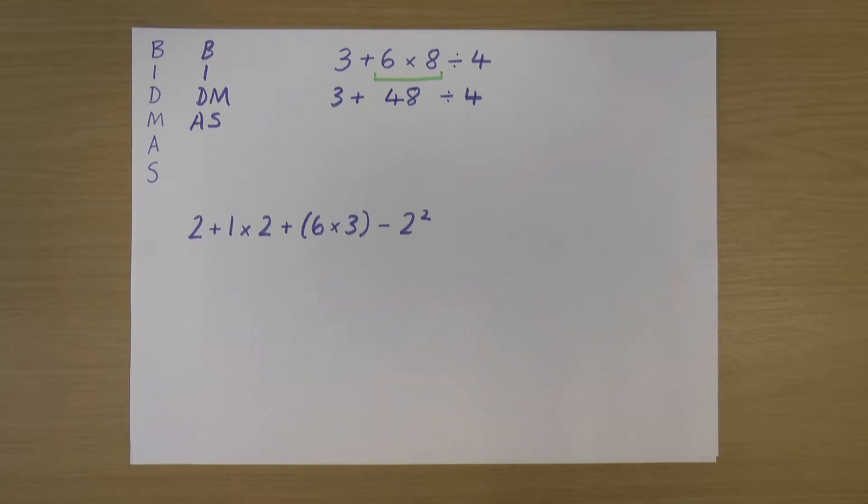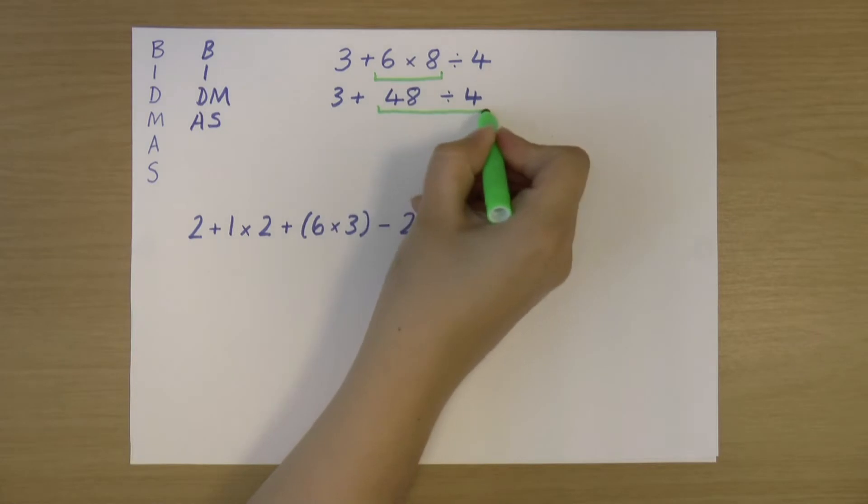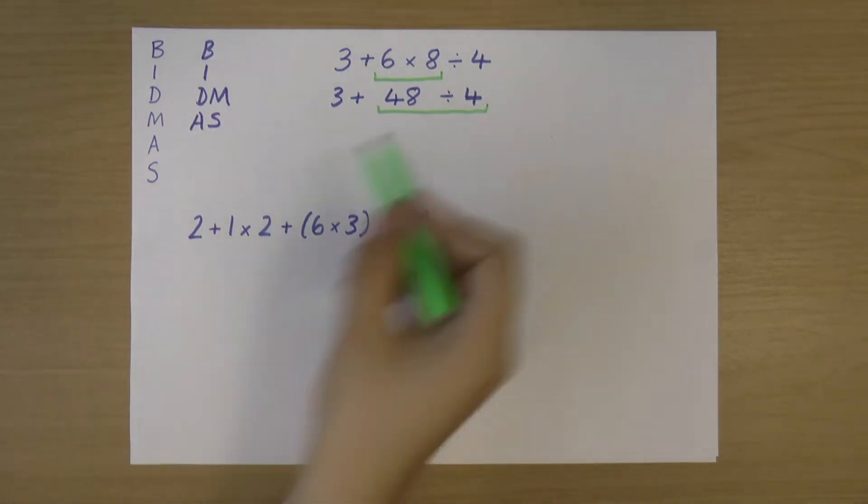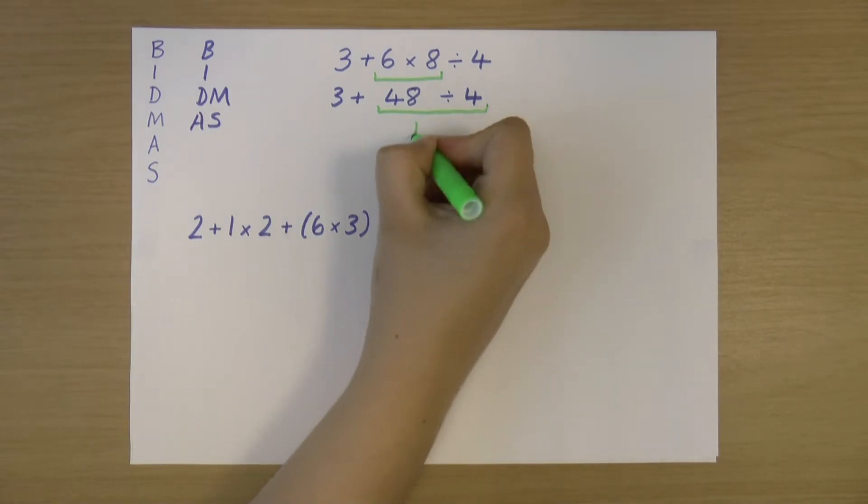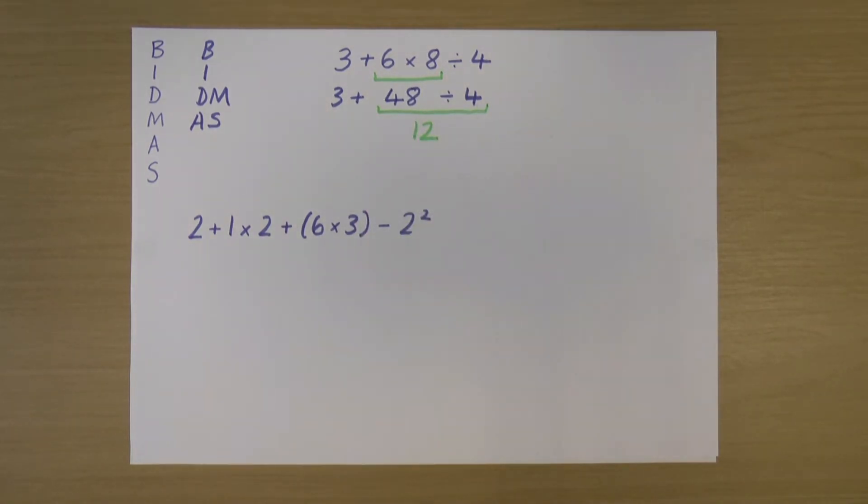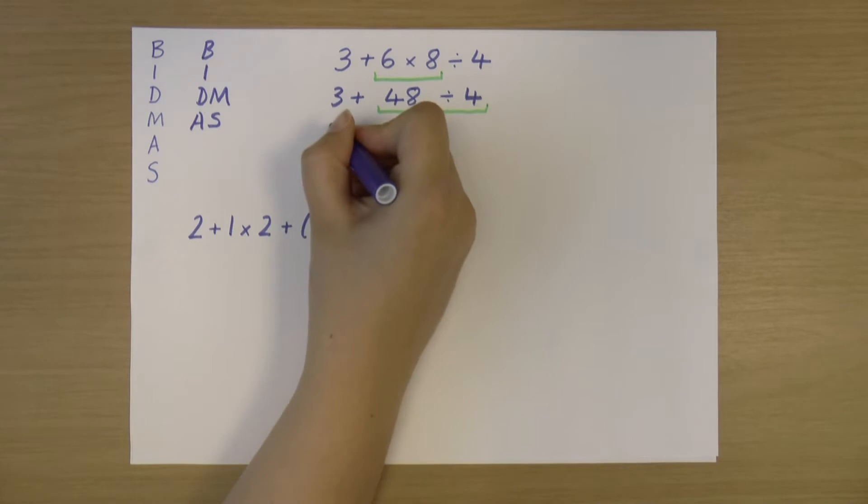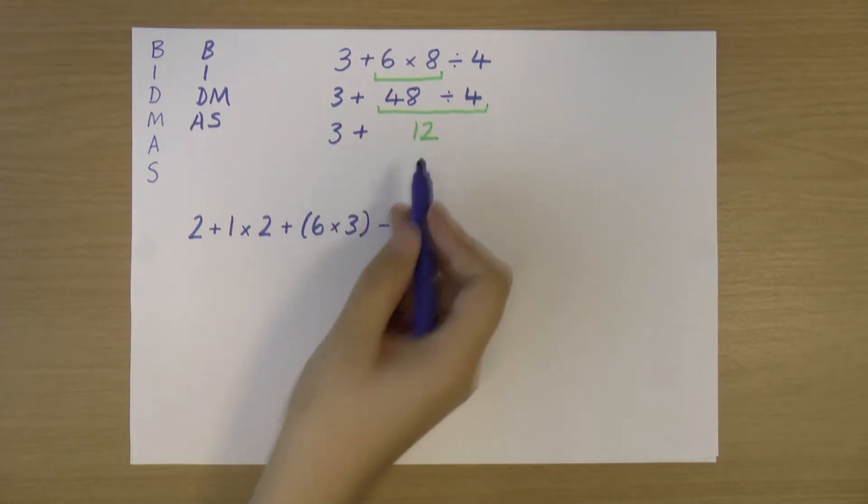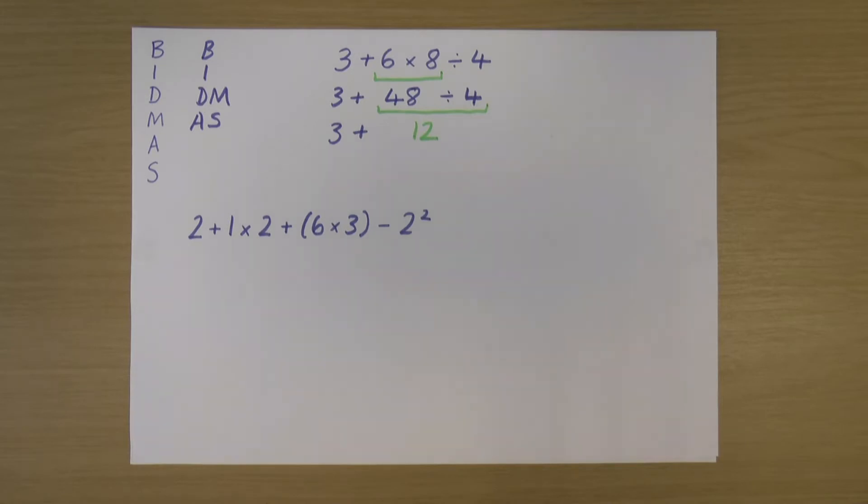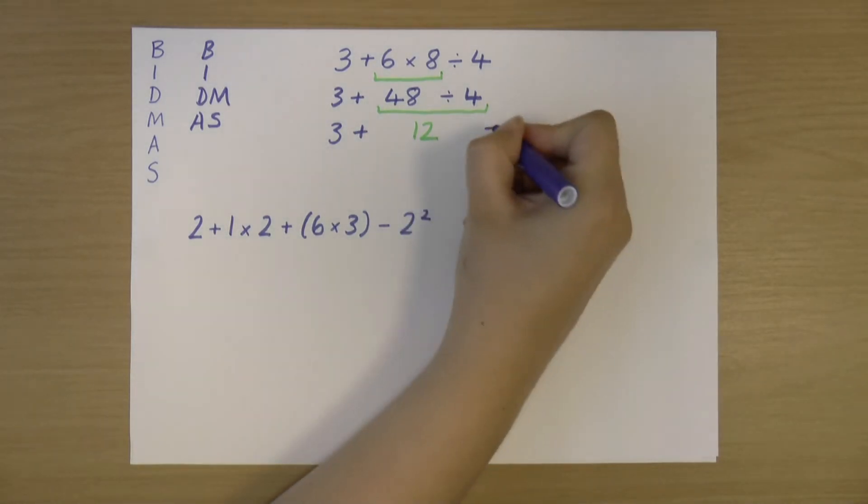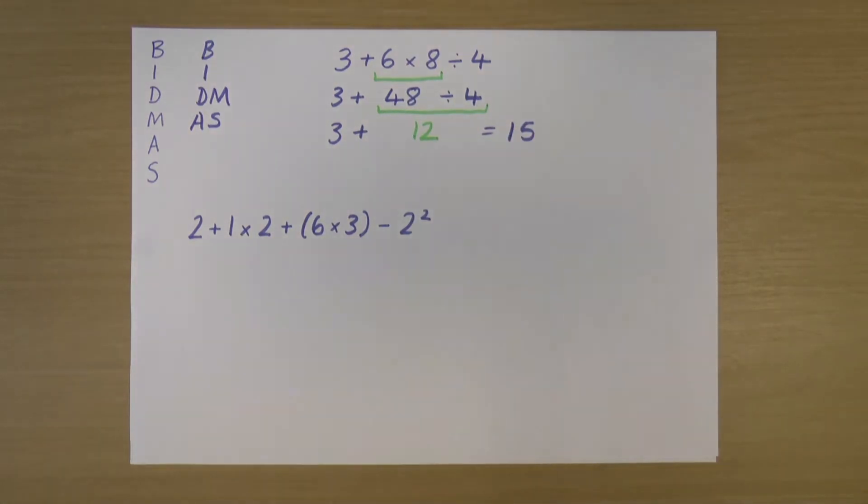So again, I'm going to work through BIDMAS. I still don't have any brackets, still don't have any indices. Do I have any divisions and multiplications? Yes, I do. I have that division that I didn't do the first time. So I'm going to do that now. So it's this here, 48 ÷ 4. So 48 ÷ 4 is 12. And like I said, I'm going to rewrite it out again. So I've still got that 3 +. So now I've got a sum that says 3 + 12. And that's something I can just do, and it gives me my answer of 15.